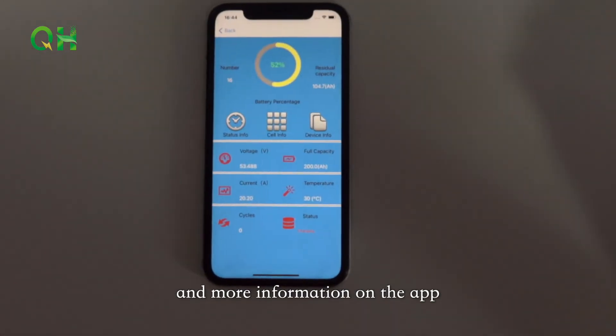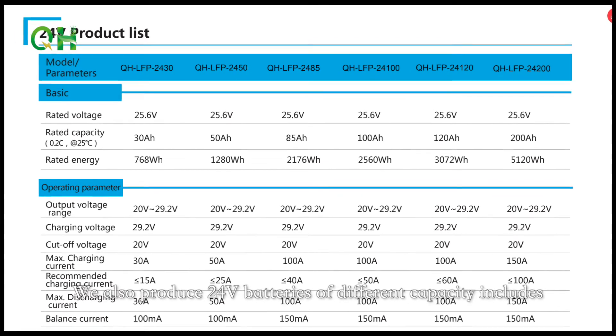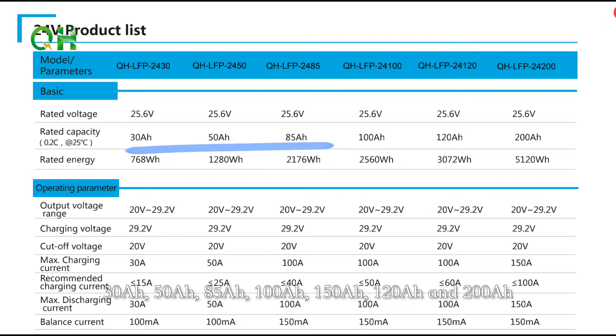We also produce 24V batteries of different capacity including 30Ah, 50Ah, 85Ah, 100Ah, 120Ah, 150Ah, and 200Ah.